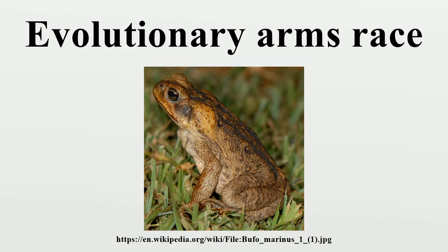When a species has not been subject to an arms race previously, it may be at a severe disadvantage and face extinction well before it could adapt to a new predator or competitor. One species may have been in evolutionary struggles for millions of years while the other might never have faced such pressures. This is a common problem in isolated ecosystems such as Australia or the Hawaiian Islands, where invasive species like cane toads and rabbits have spread rapidly. Introduced species are a major reason why indigenous species become endangered or even extinct, as was the case with the dodo.